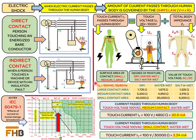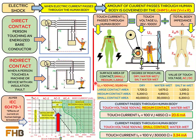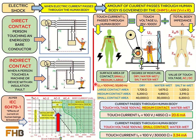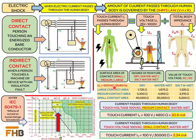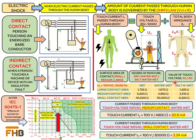IEC 60479-1 defines the values of total body impedance under tables 1 to 9. These values are defined for AC voltages with 50 or 60 Hz frequency. To develop further understanding of how body impedance changes with surface area of contact and degree of moisture, we have made a comparison here, considering a touch voltage of 100 V AC at 50 or 60 Hz. We can see that body impedance decreases with an increase in moisture content, and is greater with smaller contact surfaces, decreasing as the contact surface increases.